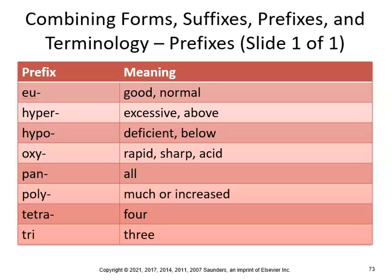Looking at prefixes: eu- means good or normal — euthyroid means normal thyroid gland function. Hyper- means excessive, hypo- means deficient. Again, hypercalcemia is excessive calcium in the blood, and hypocalcemia is deficient calcium.